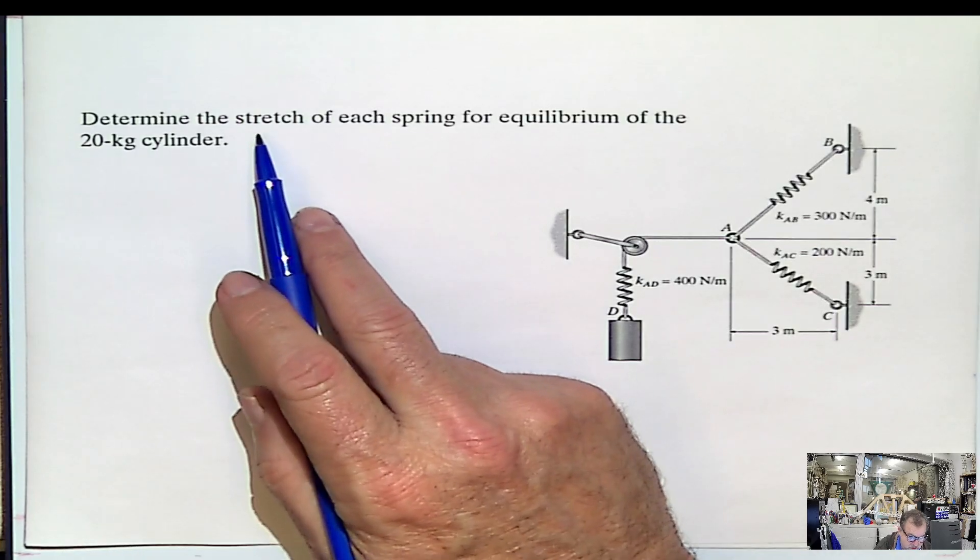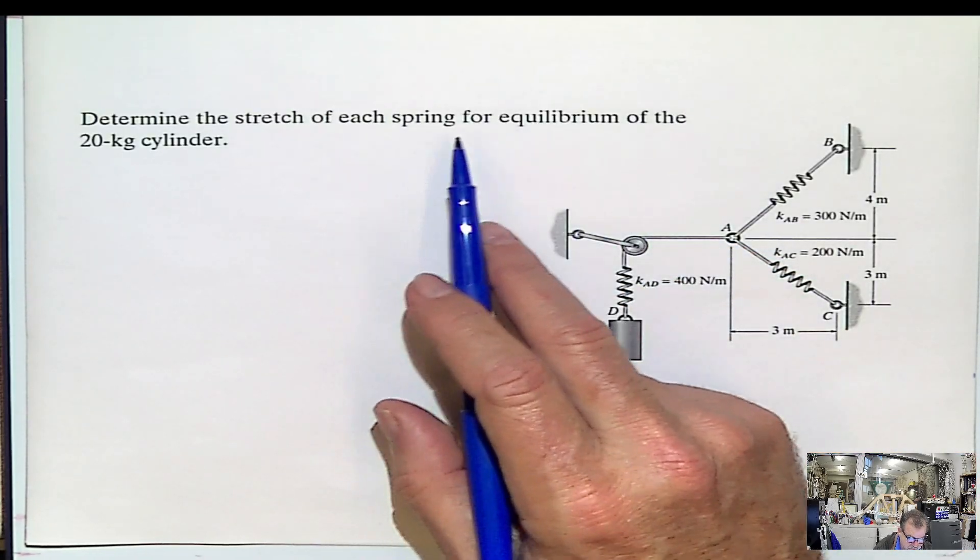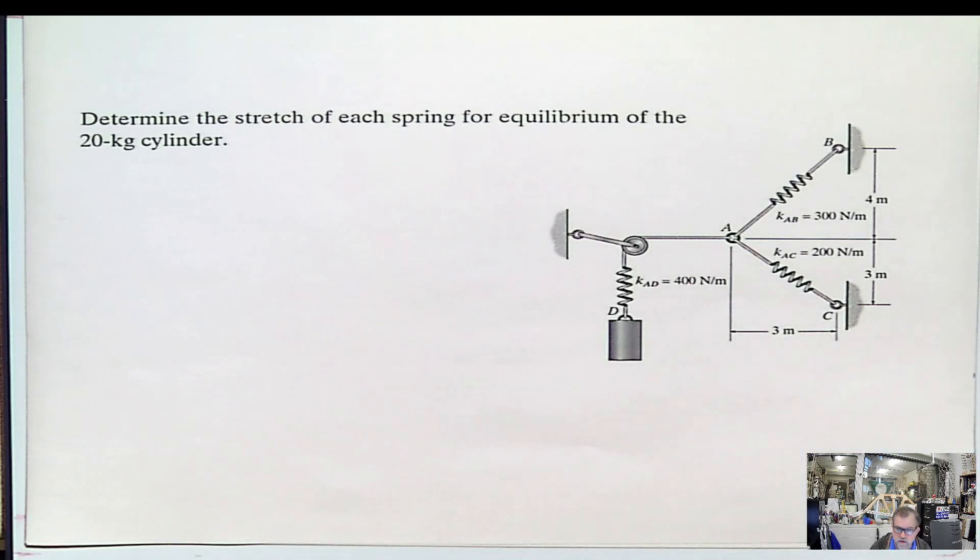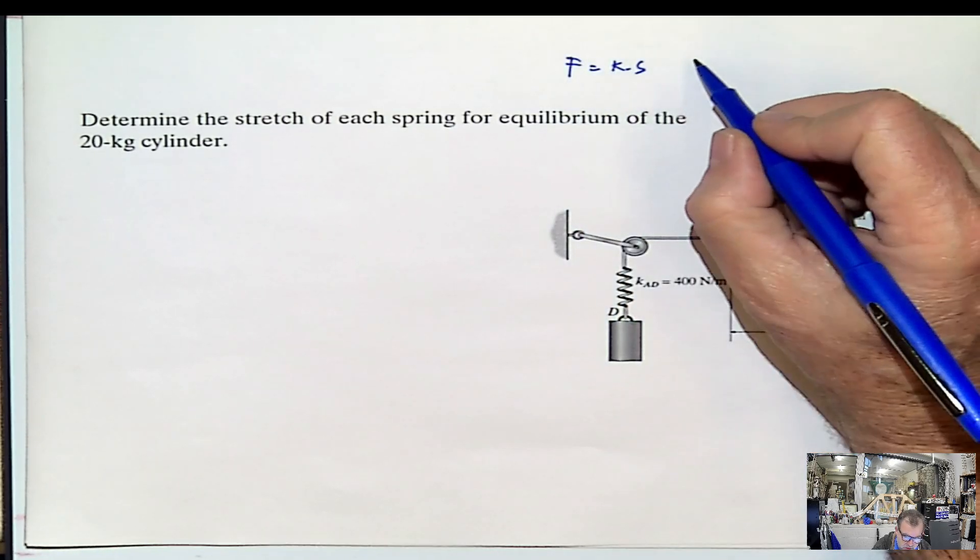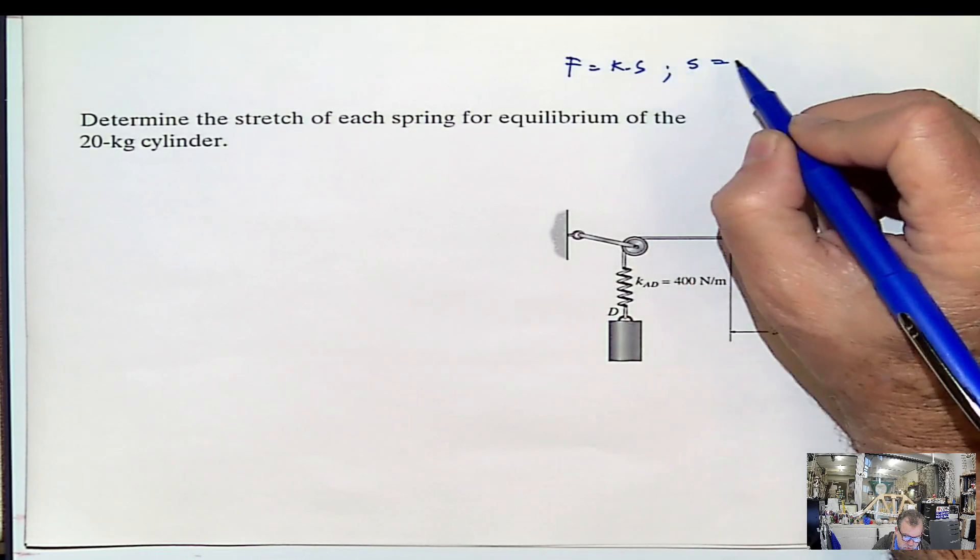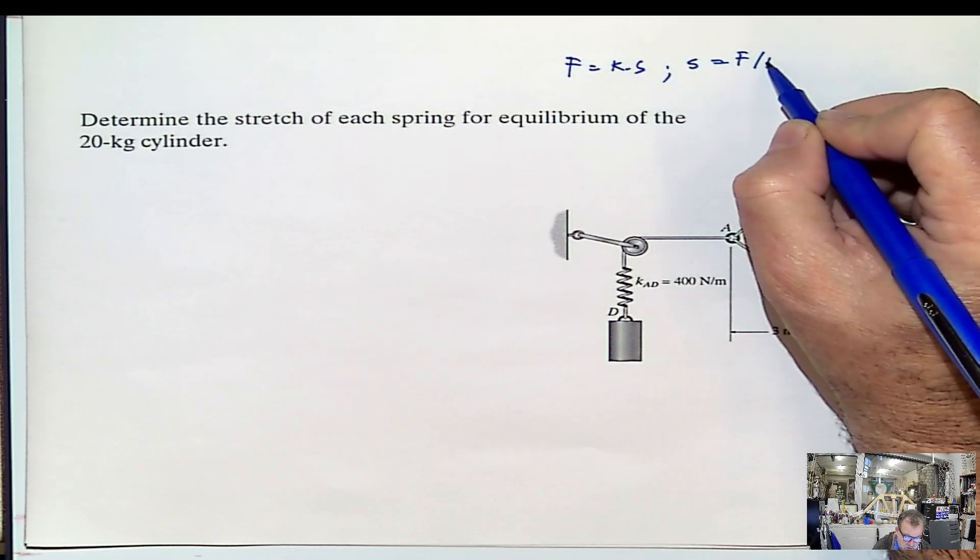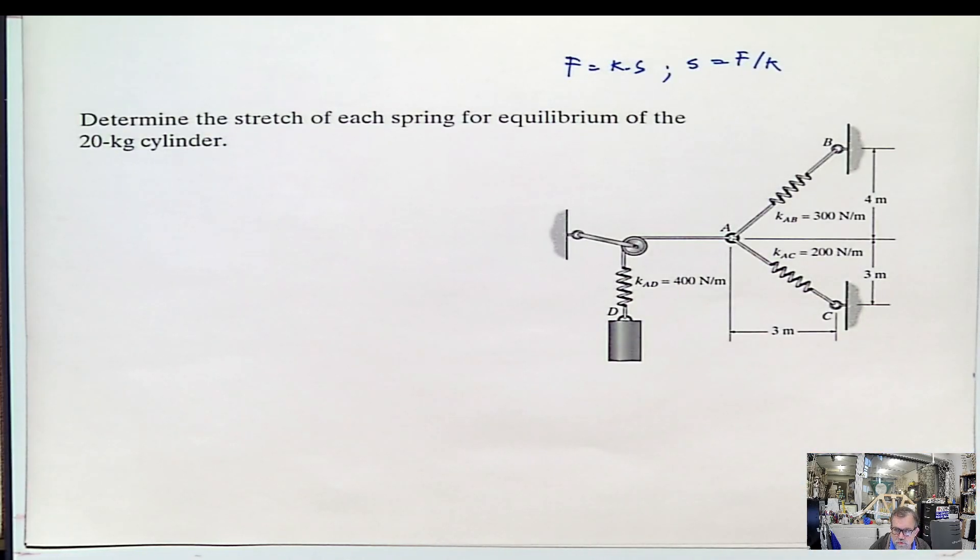But the problem is asking you to determine the stretching of each spring for equilibrium of the 20-kilogram cylinder. Forget about, once again, they are springs. If the problem is asking stretching, remember you have force equals k times stretching. And stretching is equal to force divided by the constant. Do we have the constant? Yes, we do.